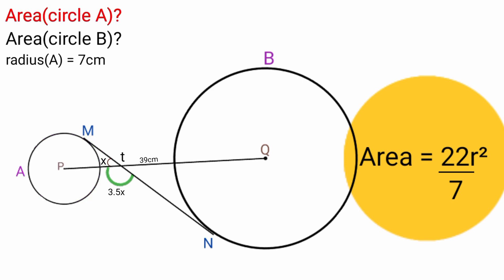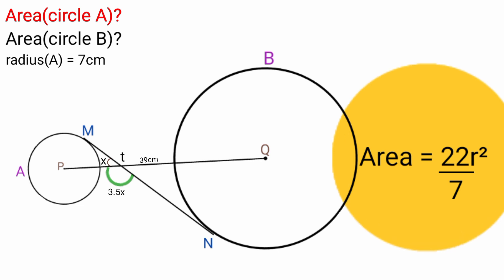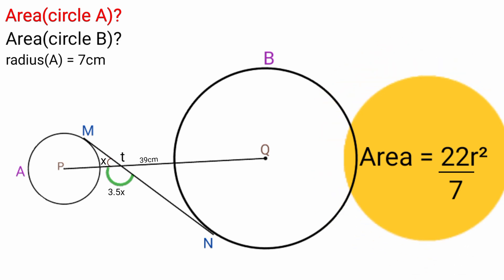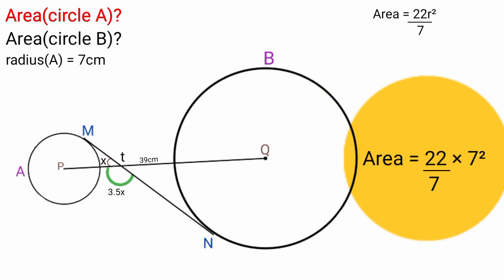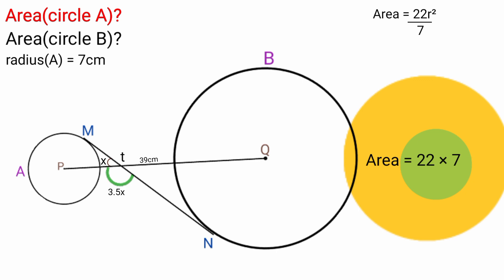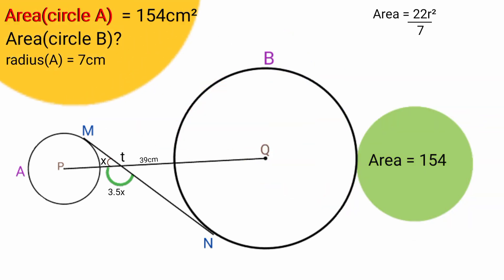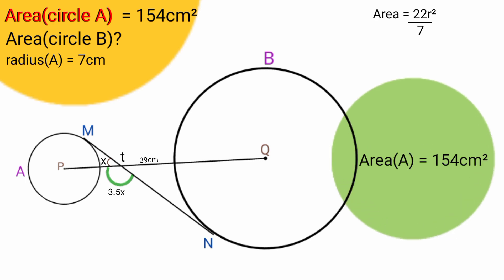To find its area we substitute R equals 7 into the equation. So area equals 22 over 7 times 7 squared. 7 squared is 7 times 7; the 7s cancel, and area now equals 22 times 7.